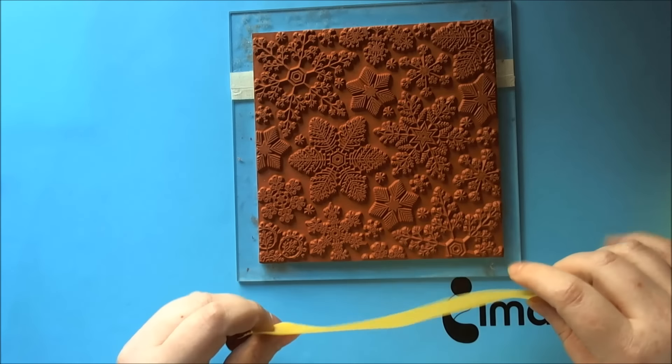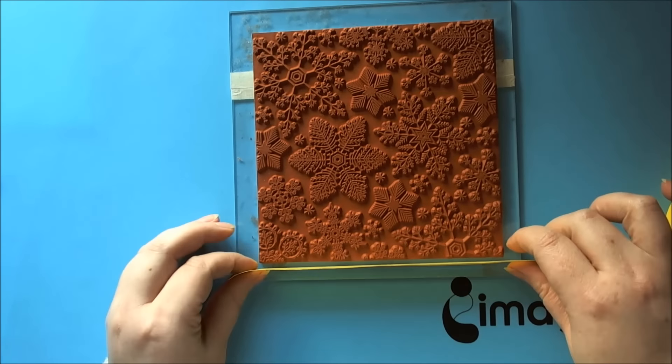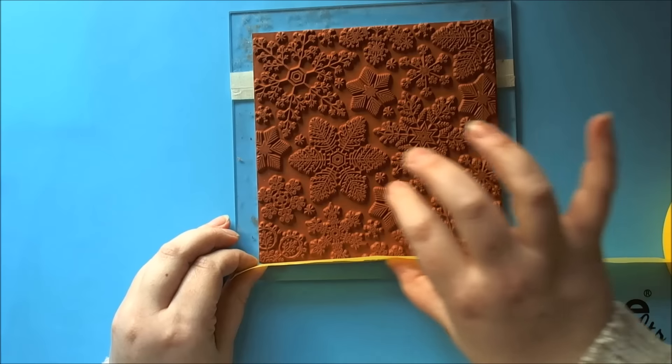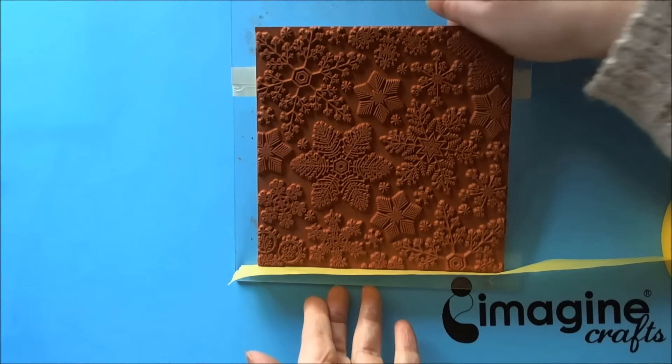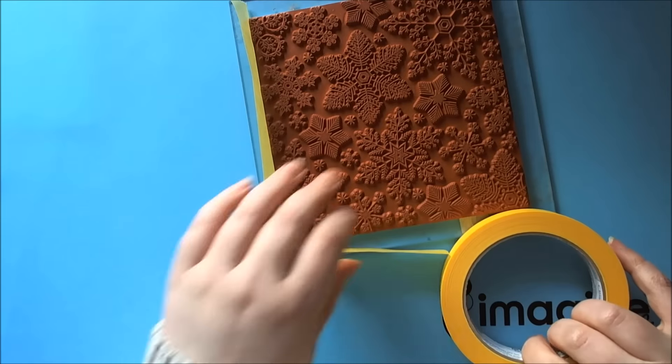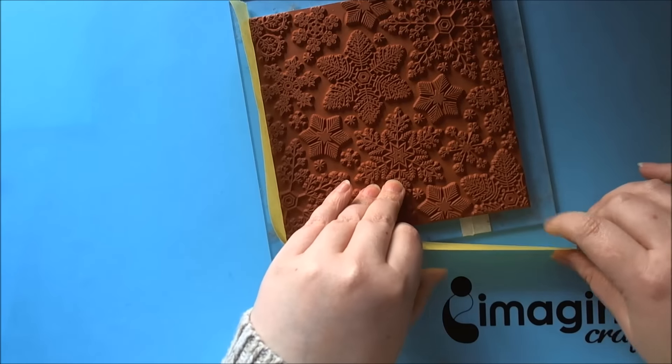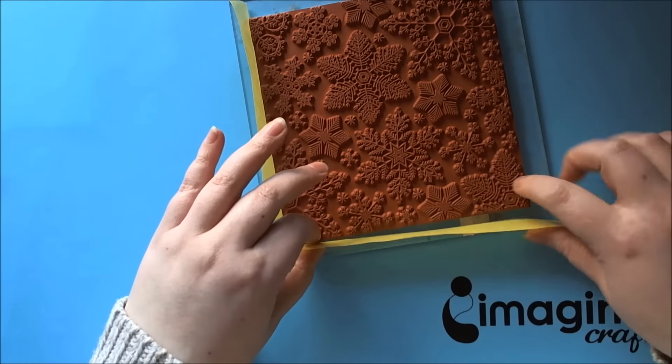The first thing I'm going to do is take some of the painter's tape and I'm going to put it all around the edge of the rubber stamp. The object is to build a solid wall.